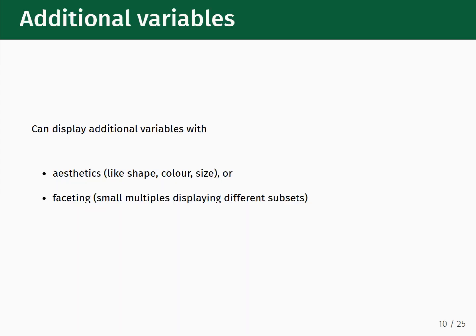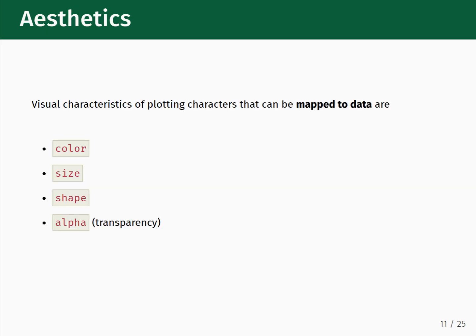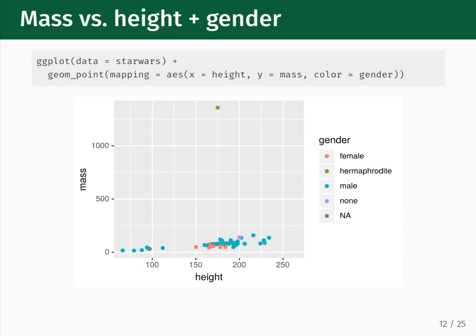We can go further than just displaying two variables at a time. We can display more variables by employing the use of additional aesthetics, such as shape, color, and size, or by faceting. Faceting creates a series of subplots containing subsets of data. The specific aesthetics that we can use to map additional visual characteristics are color, size, shape, and the alpha channel. The alpha channel controls the level of transparency. Here we see what happens when we use the color aesthetic to show the gender variable in addition to the character's height and mass. The legend on the right shows the colors mapped to different genders, which match the colors now visible on the data points in the plot.